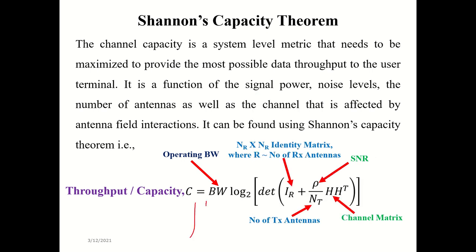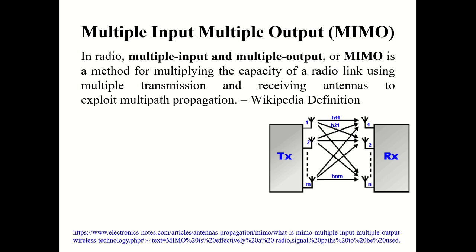Simply increasing the number of antennas does not alone serve the purpose, because each additional antenna follows its own channel path. With multiple paths, constructive and destructive interference may occur, and isolation between paths is not guaranteed. This is why we employ a channel matrix and signal processing to enhance throughput — these are the key ways to enhance system capacity.